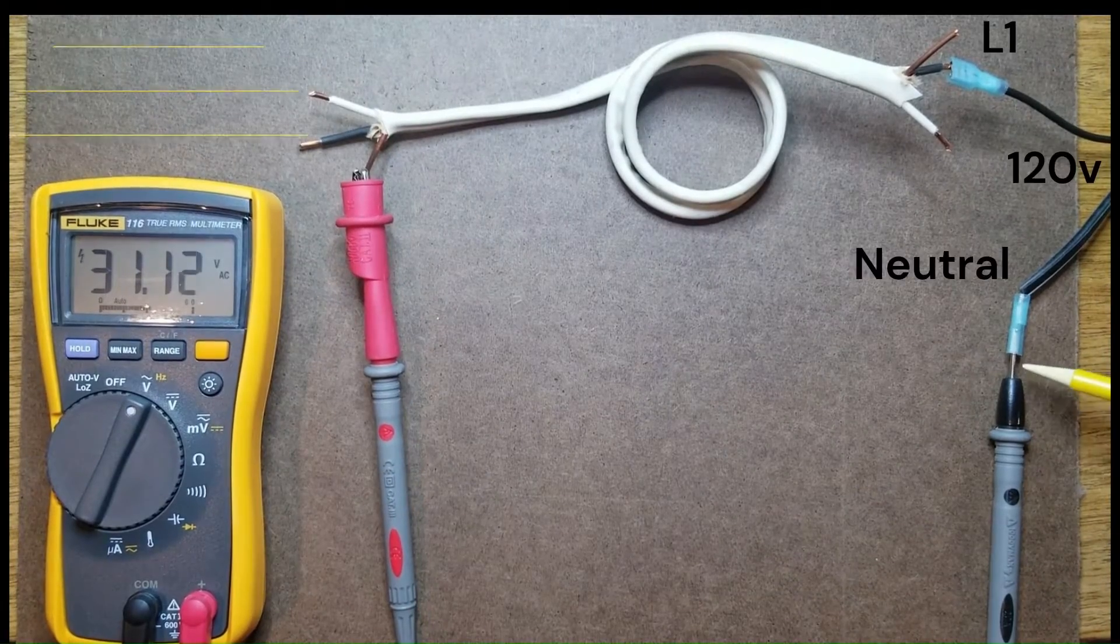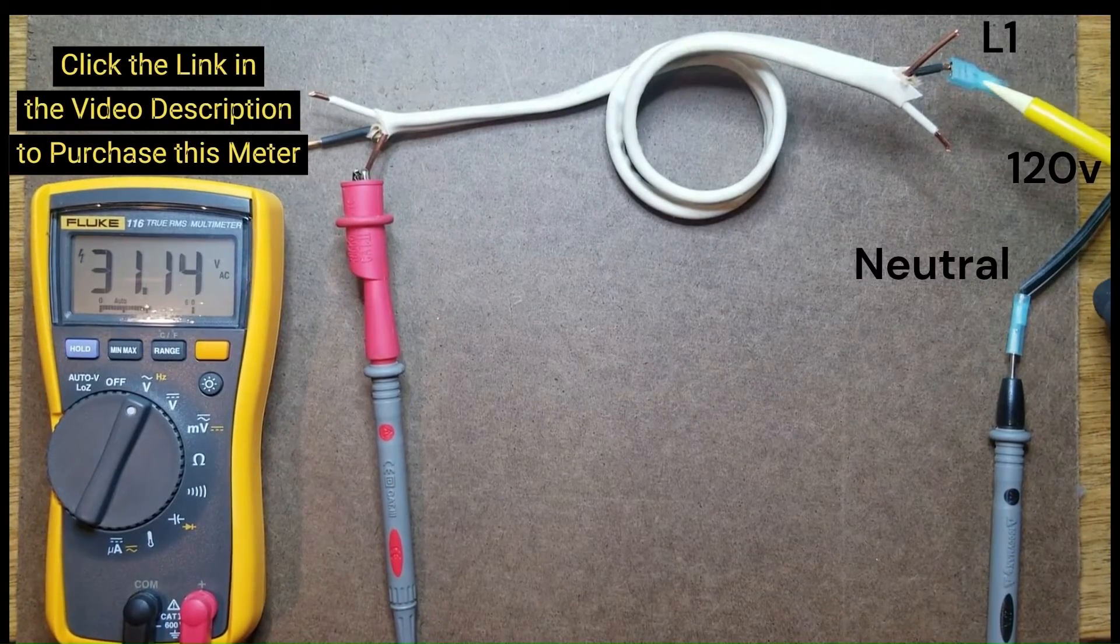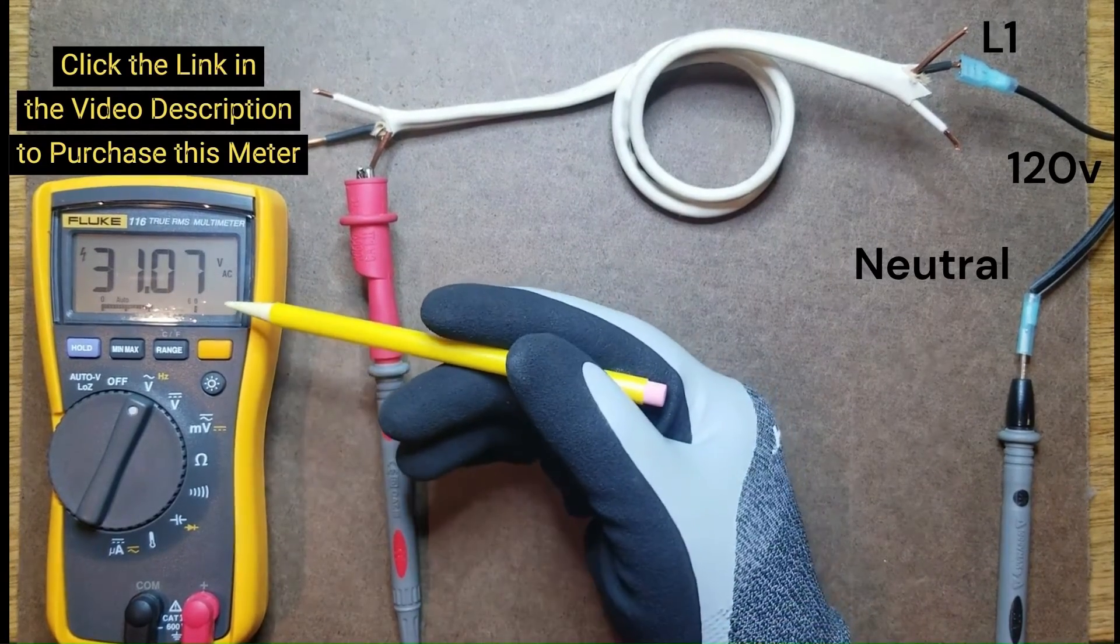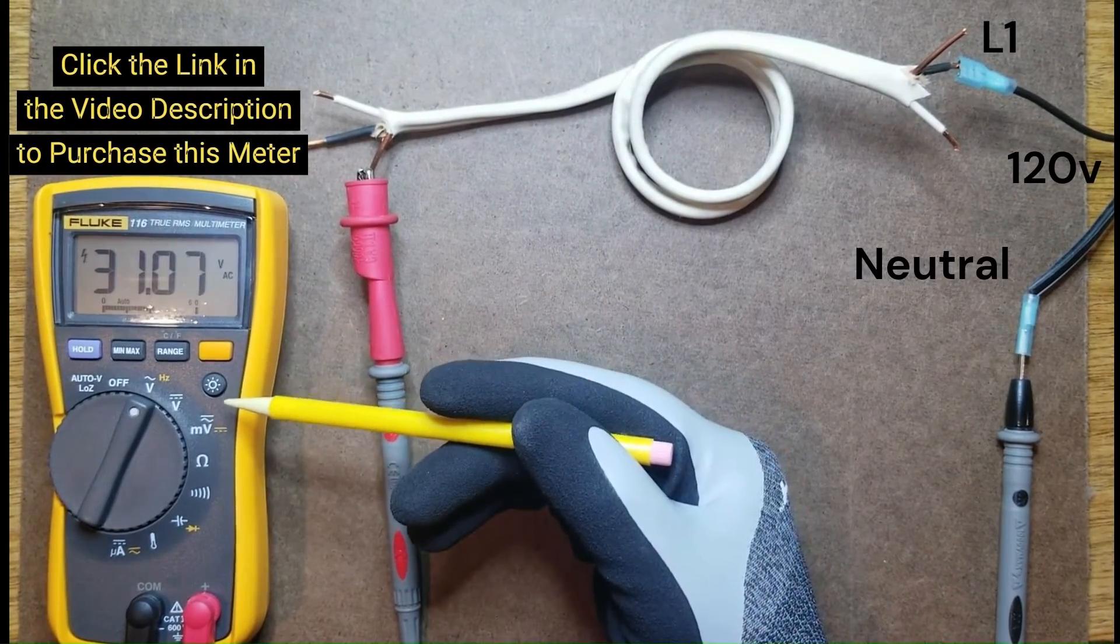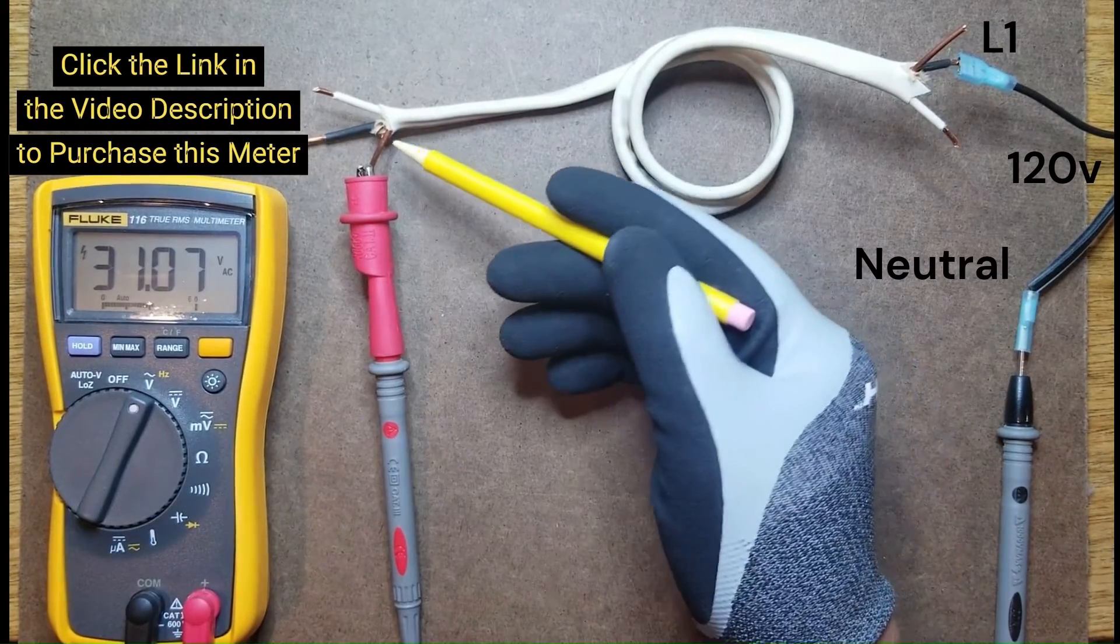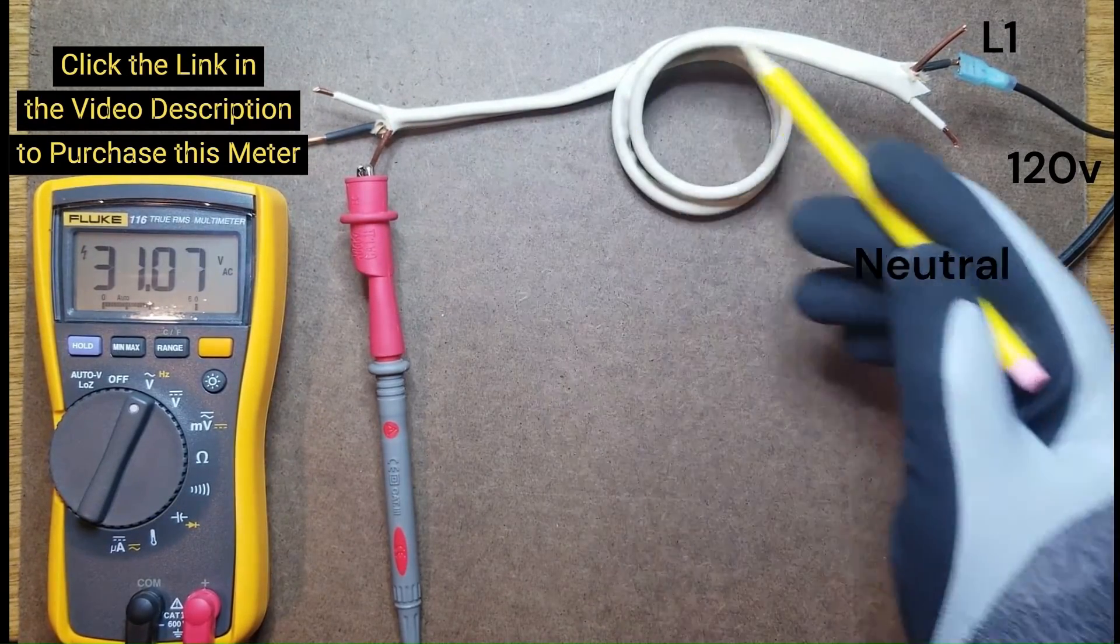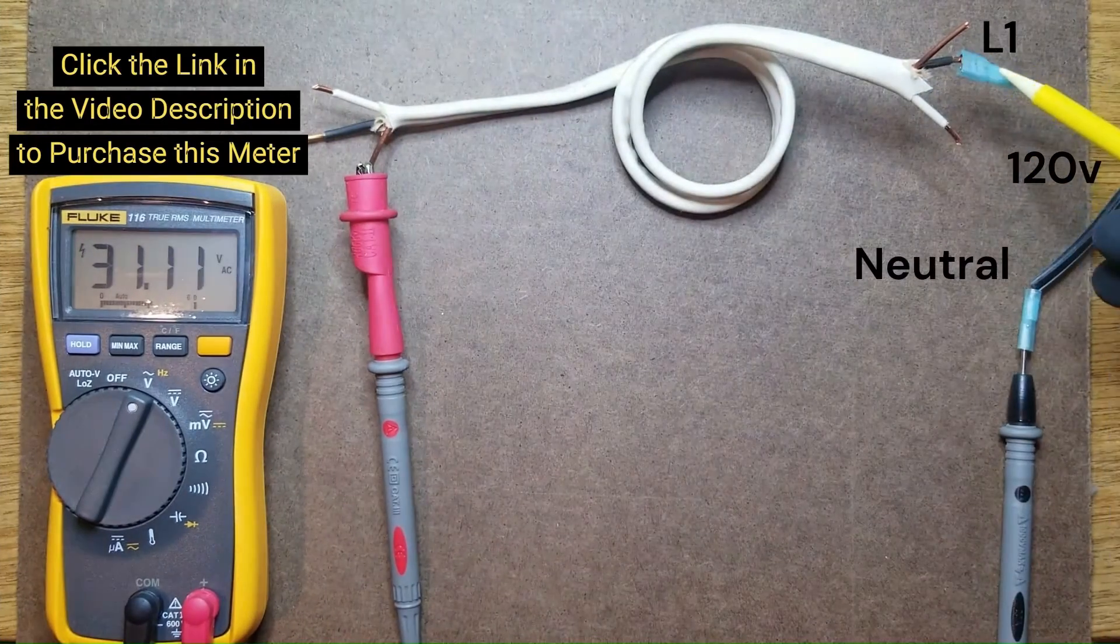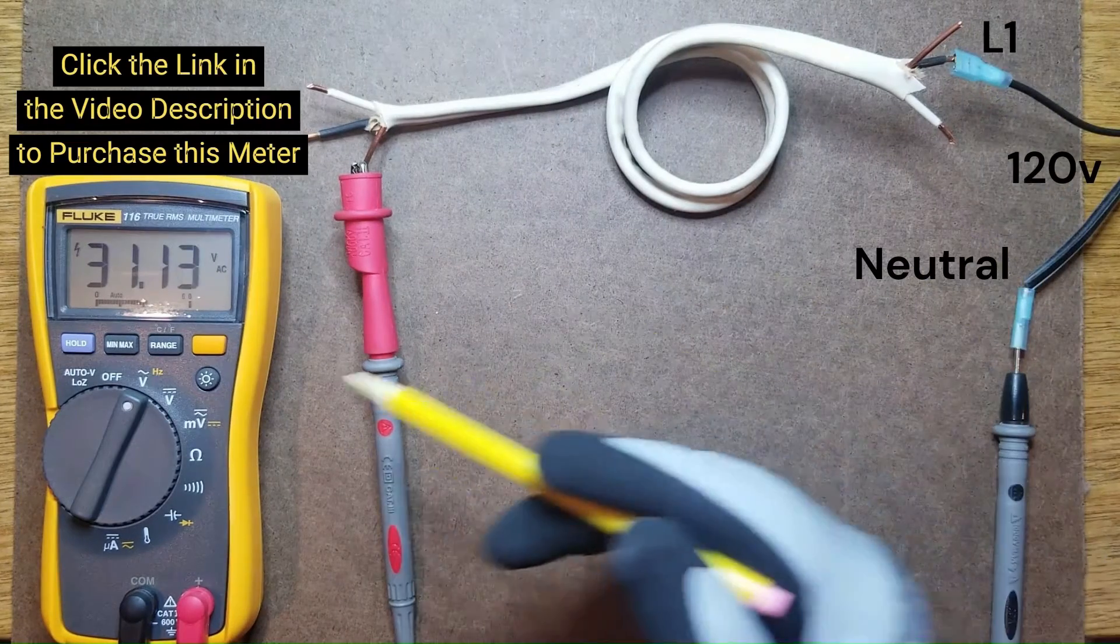We have a 120 volt source where this is neutral and this is L1 or 120 volts. Note that this voltmeter is set for traditional voltage reading mode where one side is connected to neutral and the other side is connected to that ground wire which is not connected to anything but is just in close proximity to this black wire which has 120 volts potential connected to it.